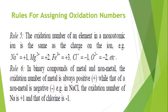Rule six: in binary compounds of a metal and a nonmetal, the oxidation number of the metal is always positive while that of the nonmetal is negative. For example, in sodium chloride (NaCl), the oxidation number of sodium is plus one and that of chlorine is minus one.